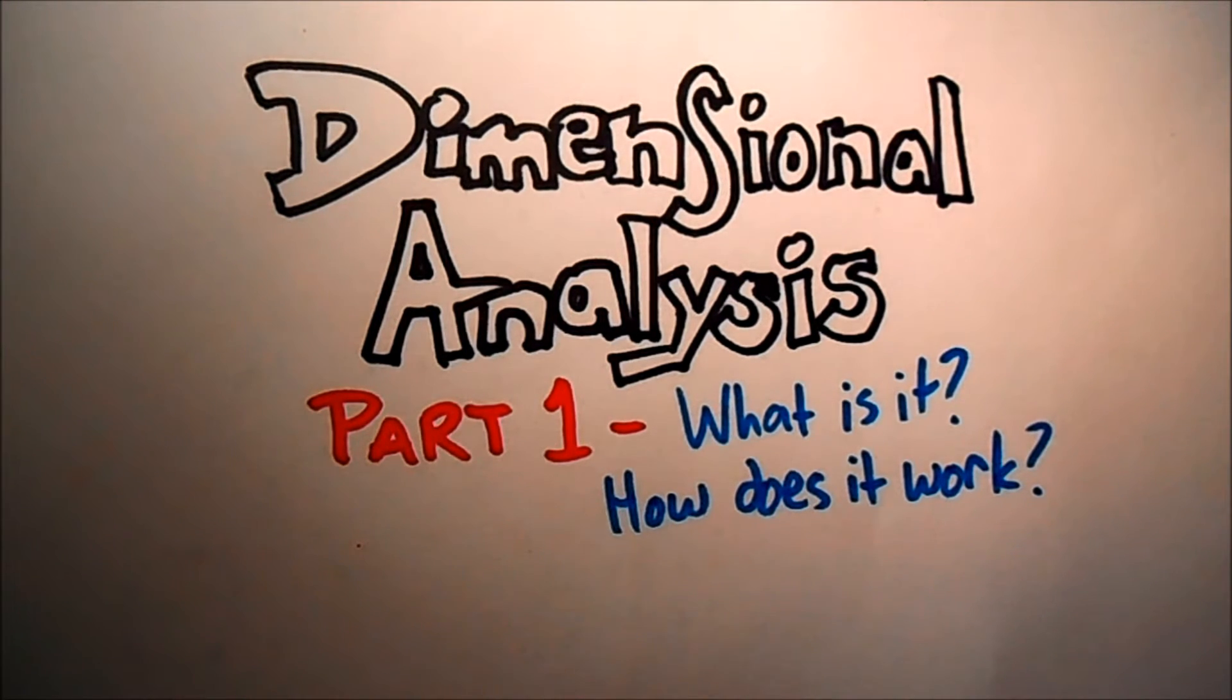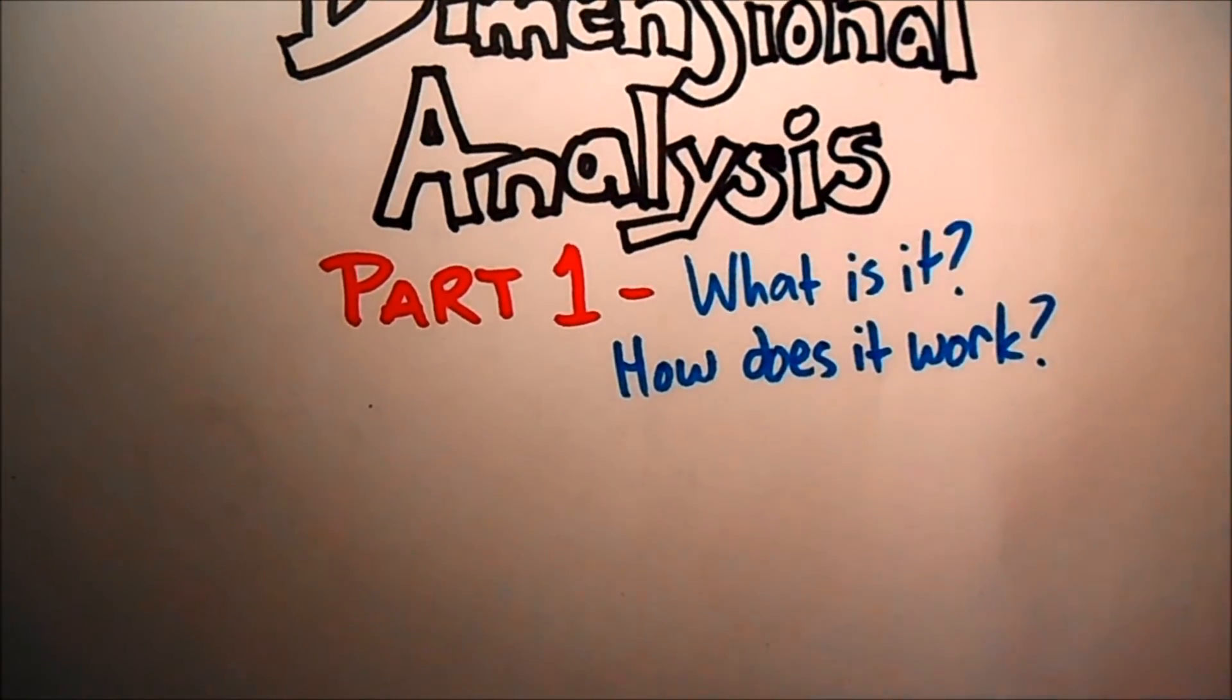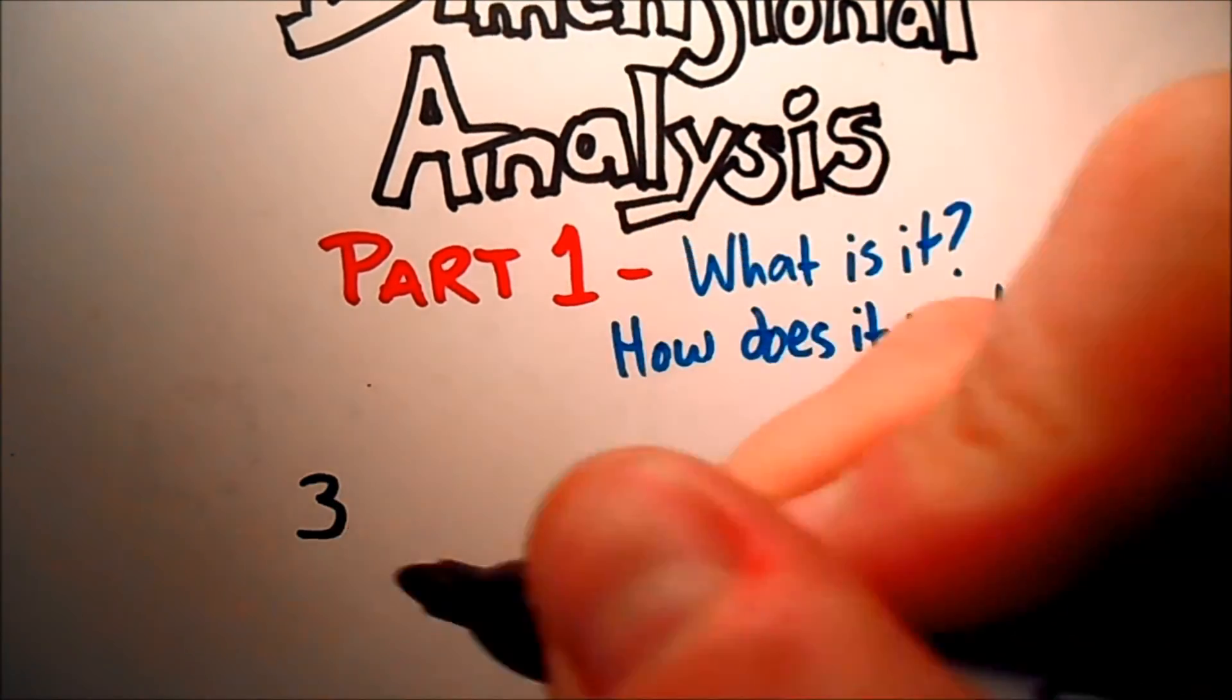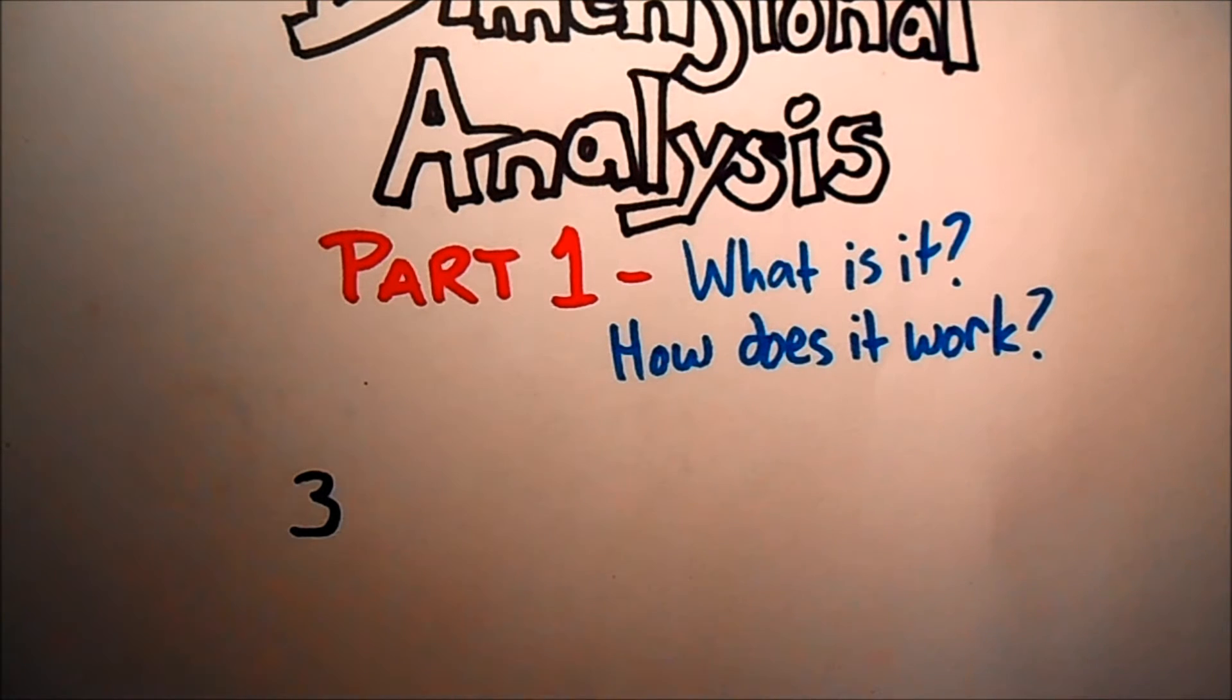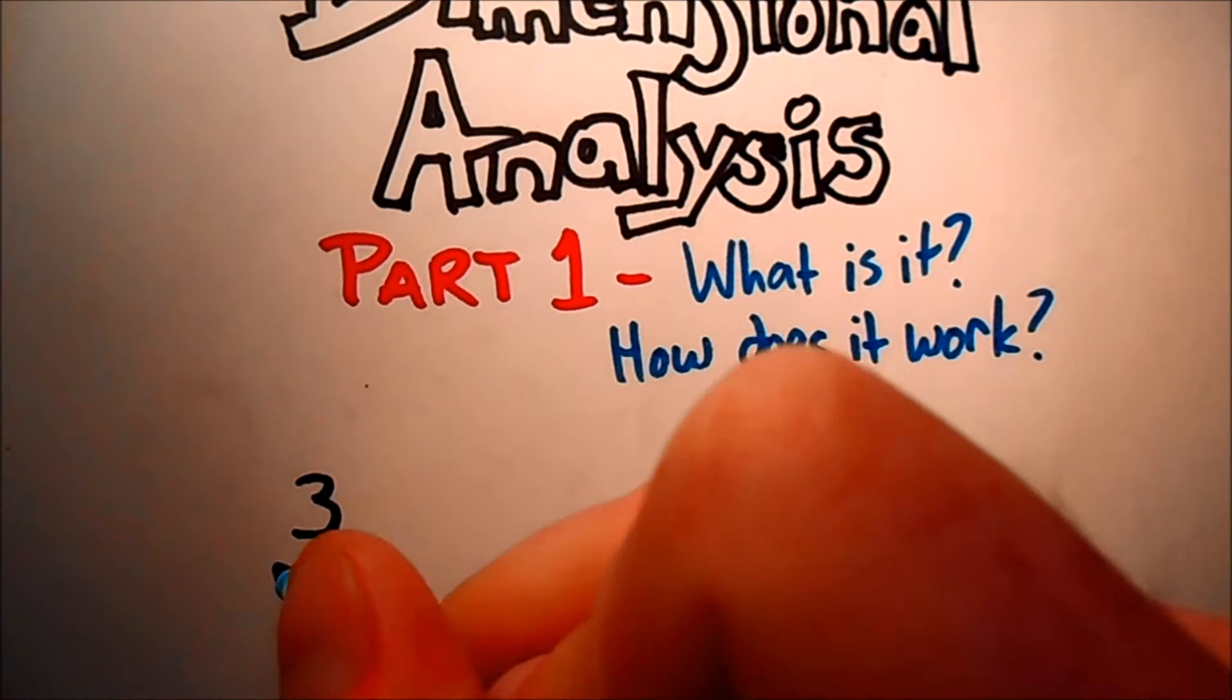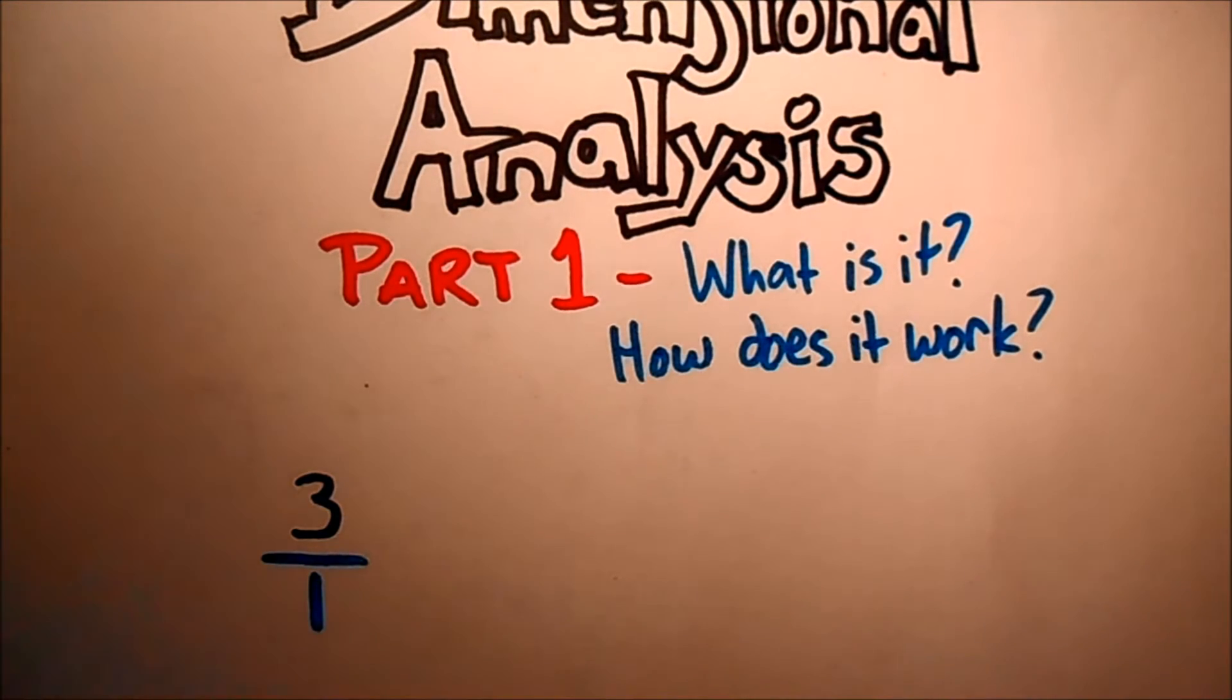The first one I want to go over is that all numbers have a denominator. When I write the number 3, for example, even though I'm not necessarily showing it, it does have a denominator. It's just the denominator is an understood 1. All numbers, whether they are just regular numbers or actual measurements, have a denominator. That's the first thing you've got to get under wraps.